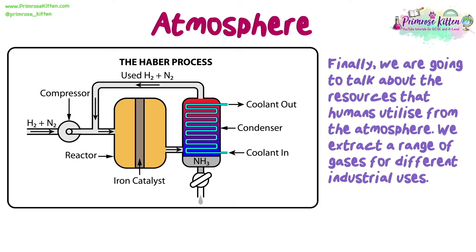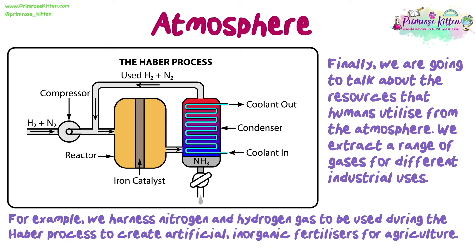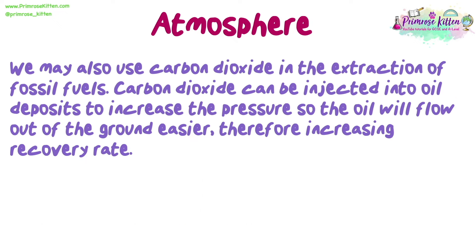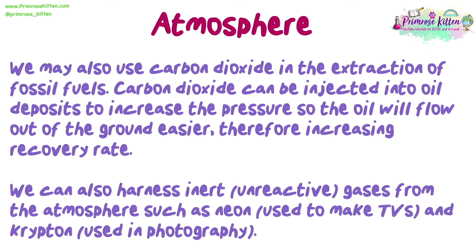Finally, we are going to talk about the resources that humans utilise from the atmosphere. We extract a range of gases for different industrial uses. For example, we harness nitrogen and hydrogen gas to be used during the Haber process to create artificial inorganic fertilisers for agriculture. We may also use carbon dioxide in the extraction of fossil fuels — carbon dioxide can be injected into oil deposits to increase the pressure so the oil will flow out of the ground easier, therefore increasing recovery rate. We can also harness inert or unreactive gases from the atmosphere, such as neon, which is used to make TVs, and krypton, which is used in photography.